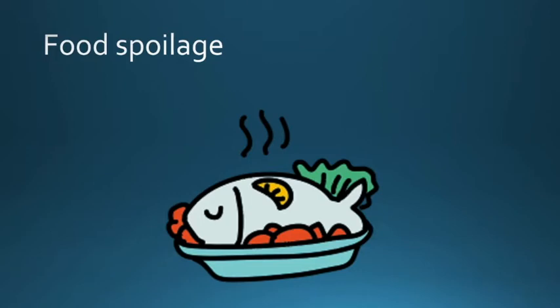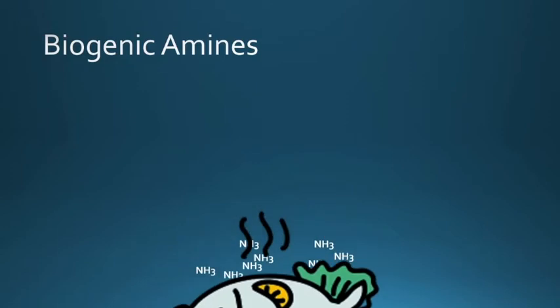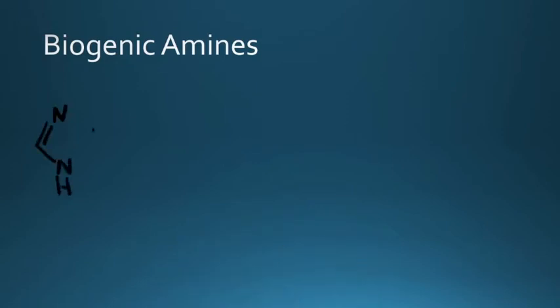When food begins to decompose, it will release a foul ammonia smell, and this is known to be the release of biogenic amines. A biogenic amine is a decarboxylation of amino acids and usually occurs when the meat is being exposed to an excess amount of light, heat, or air.